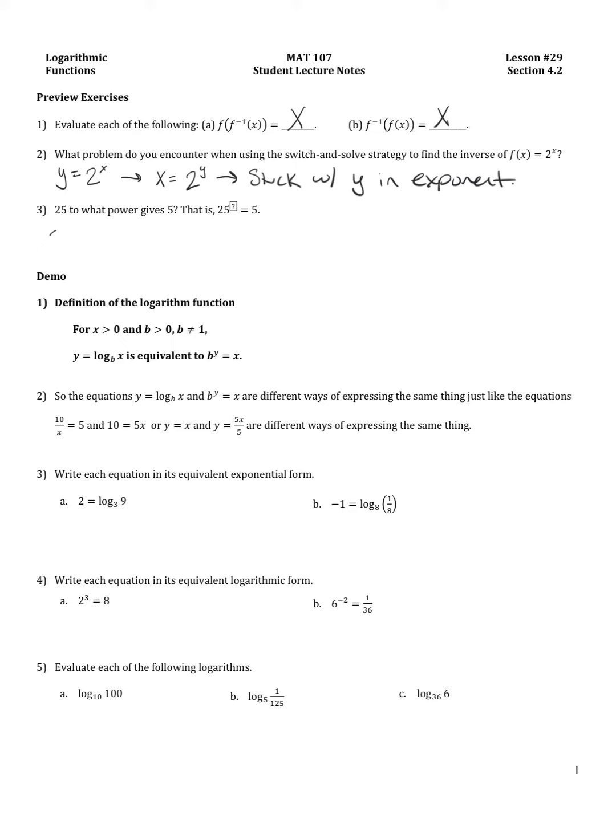So let's write down some of what we said. So we said 25 to the 0 is 1. 1 is too small, I want something that gives me 5. But 25 to the 1 is 25. So it has to be a number between 0 and 1 to give me 5 because 5 is between 1 and 25.